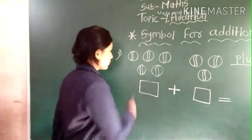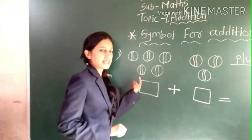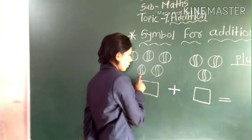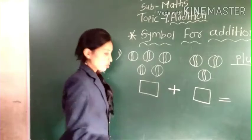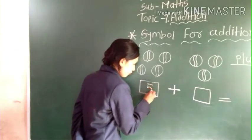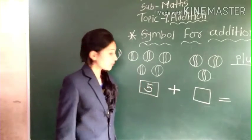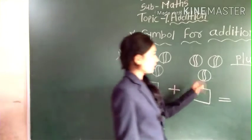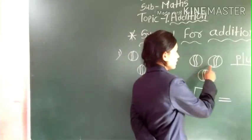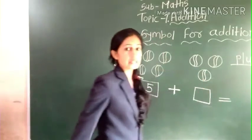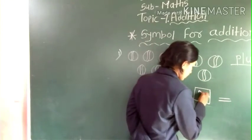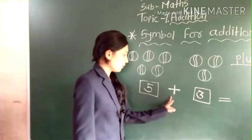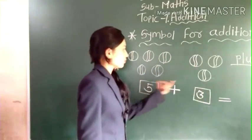Counting by objects. See here — how many balls are here? Let's count: one, two, three, four, five balls. So we write here five balls. Plus — how many balls are here?